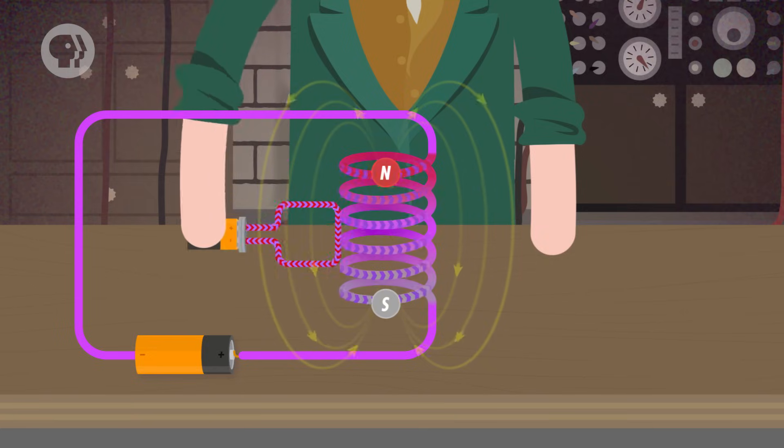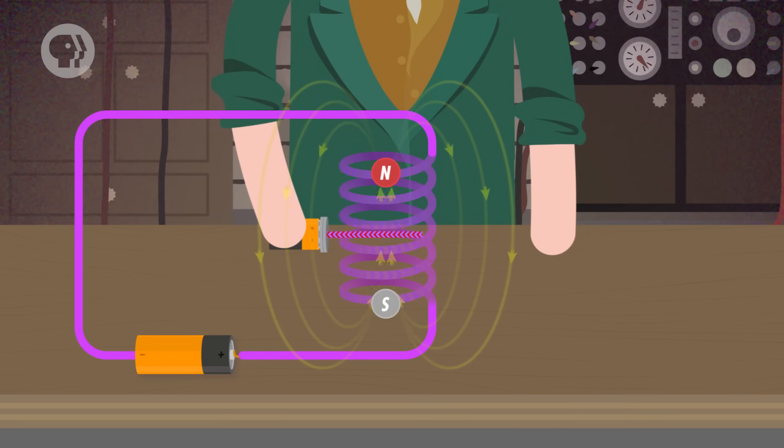And if you put a loop of current-carrying wire in a magnetic field, it'll turn. Ampère's law lets you calculate the strength of the currents in magnetic fields in all these situations. This also helps to explain how motors work.